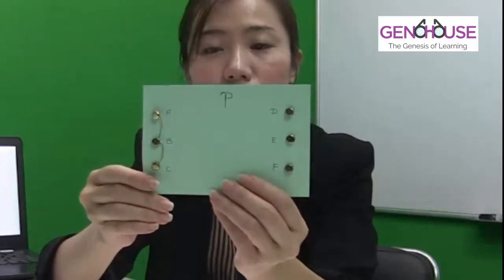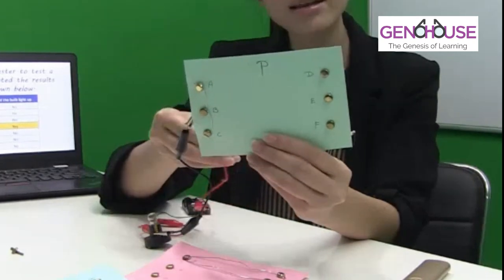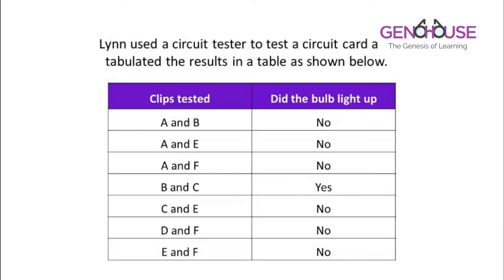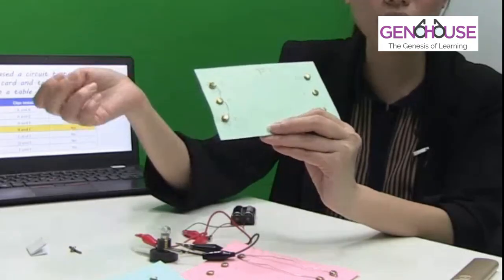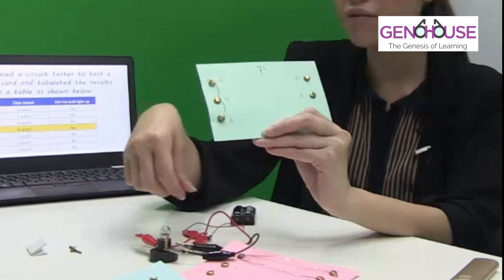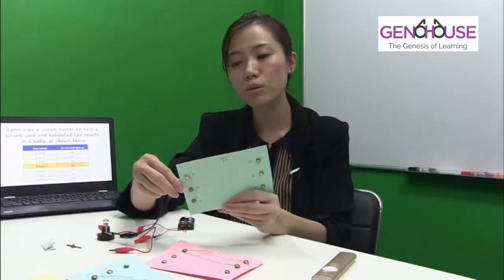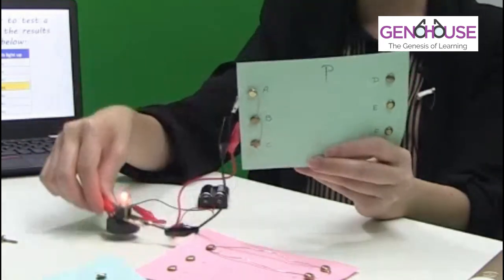Let's look at card P. First, I test B and C — it lights up. Now to be systematic, I check A and B, which should not light up. However, the light bulb does light up. This means circuit card P is not the one Lynn used, so I can set it aside.